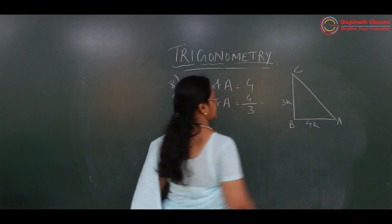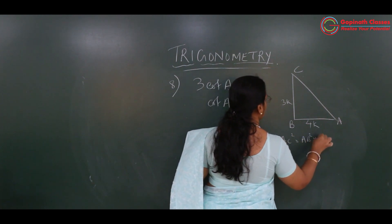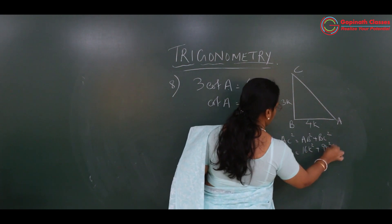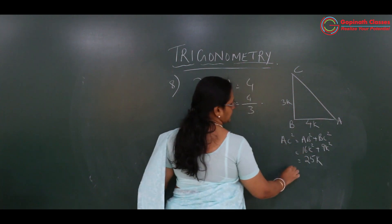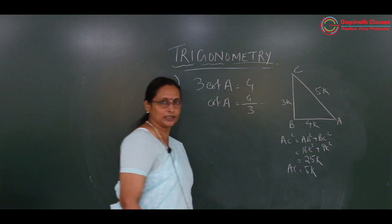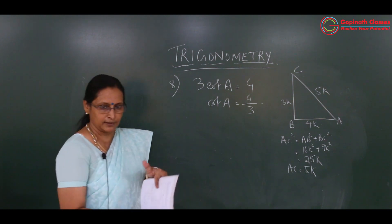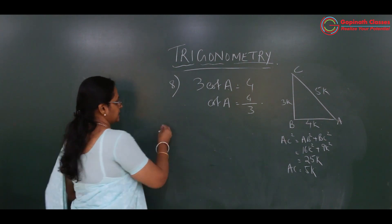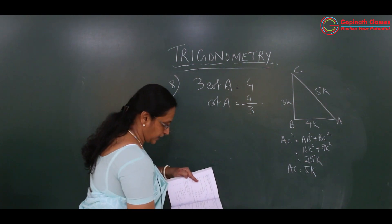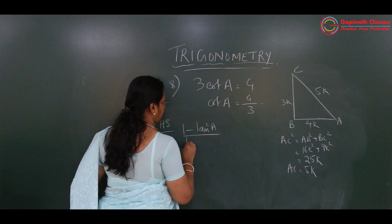We find AC square: AC square equals AB square plus BC square — 4k square plus 3k square — 16k square plus 9k square — equals 25k square. Thus AC equals 5k. Now we have all three sides. We want to verify whether LHS and RHS are equal. LHS is 1 minus tan square A upon 1 plus tan square A.